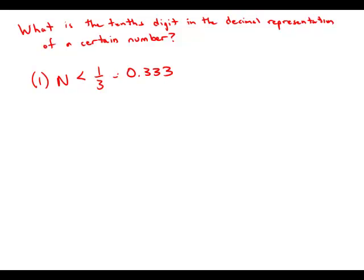Well, if the number is less than that, it could be anything with 0.1, anything with 0.2, or it could be anything even ending in 0.31 or 0.32. It could be any of those. And so by itself, this statement does not allow us to determine uniquely what is the tenths digit. So this statement by itself is insufficient.